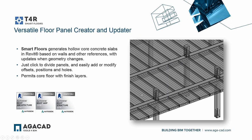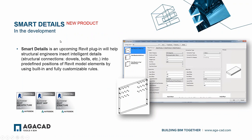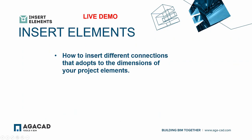Smart Floors tool helps us create hollow-core slabs. Sort Mark tool helps us renumber selected elements according to different rules — with one click you can renumber all your elements using saved rules which you can reuse from one project to another. Smart Details is an improvement or separate tool to insert connection details with more rules and possibilities than Insert Elements.